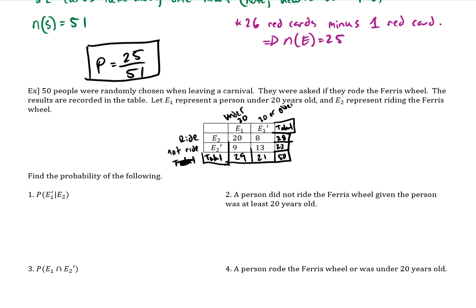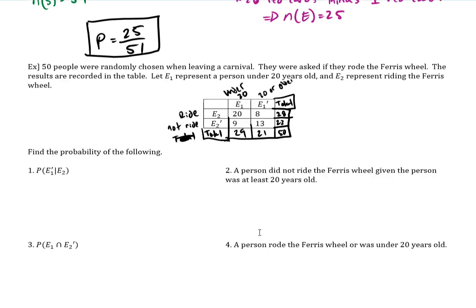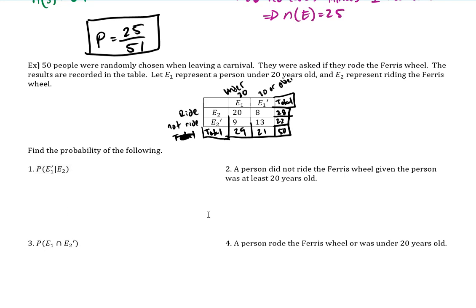Now that we have this table marked up, we can find whatever probability. Here's where they gave the notation immediately. So the probability that they are 20 or older — that's not E1 — given E2, which is riding the Ferris wheel. The given part is what's important for us: that's telling us to use the number of people that rode the Ferris wheel as the sample space.